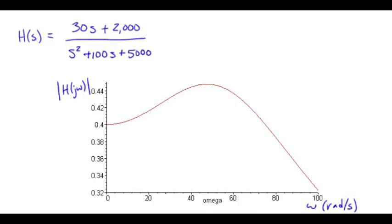Next, we're trying to find the pole zero plot. So we need to factor the numerator and the denominator. And that allows us to isolate the zeros and the poles. The numerator is pretty easy. We can write that as 30 times S plus 2,000 divided by 30, or 66.7.